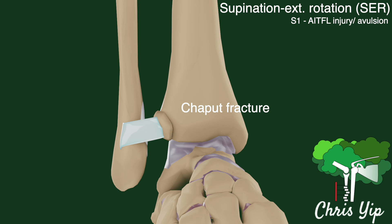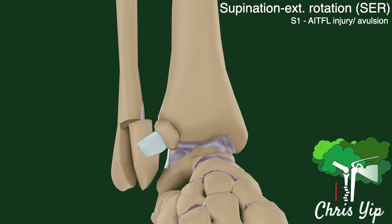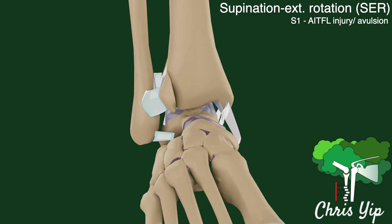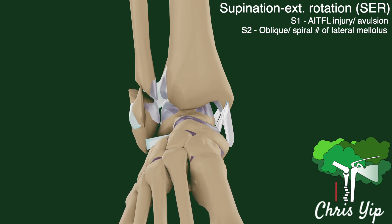There can also be an avulsion fracture of the distal fibula, known as a Wagstaff fracture, or it could be a combination of the two, as well as other patterns not described here. As the foot continues to externally rotate, the distal fibula will also fracture, either in a short oblique or spiral pattern, usually around the level of the tibial plafond.